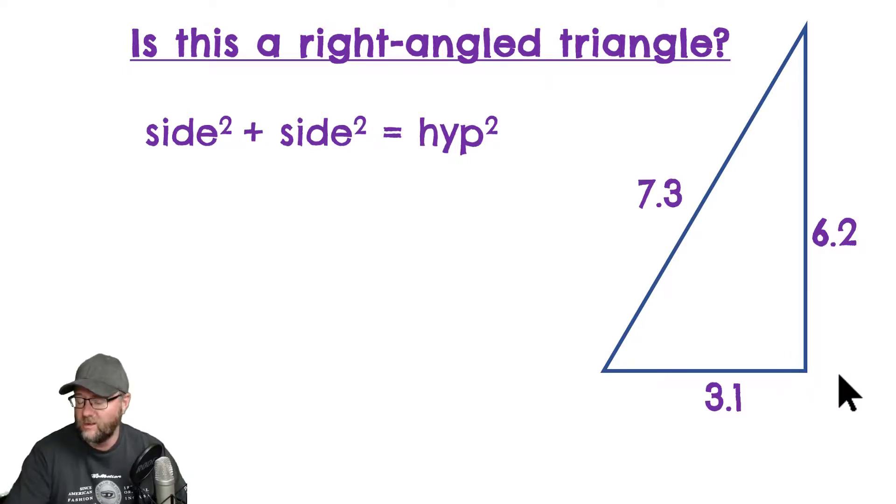Is this a right angle triangle? Looks like it. I've got two shorter sides, and a longer side here. If this was a right angle triangle, this would be true. One side squared plus the other side squared equals the hypotenuse squared.